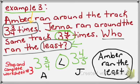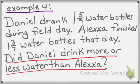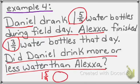Please stop the video and complete worksheet number 3 right now. Now let's do a final example — one more with mixed numbers so we make sure we understand how to do that really well. Daniel drank 1 and 5-9ths water bottles during field day. Alexa finished 1 and 3-7ths water bottles that day. Did Daniel drink more or less water than Alexa? I want to know: did Daniel drink more or less than Alexa? I know he drank 1 and 5-9ths, and Alexa drank 1 and 3-7ths bottles. I'll compare Daniel's amount, 1 and 5-9ths, to Alexa's, 1 and 3-7ths.